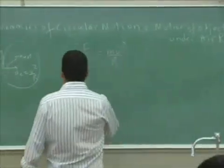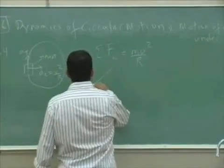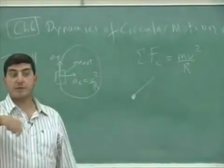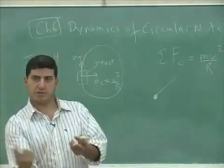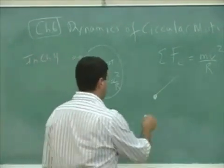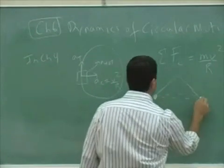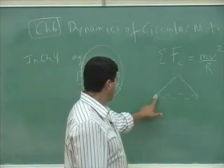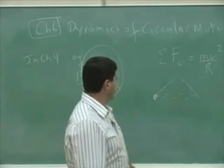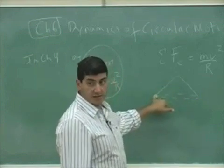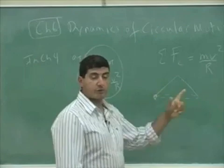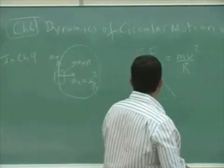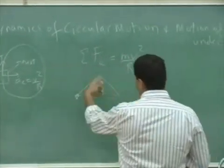For example, you could have a string, an object at the end of a string, and you could be turning the string maybe at an angle even, and the object is going around a circle like this. And you should be able to analyze that. For example, if you're given the velocity of the object and its mass, you should be able to find the angle here. Or if you're given the angle, you should be able to find the velocity. Or if the problem asks you for the period of the motion, you should be able to find its period. So that's a string type of situation.